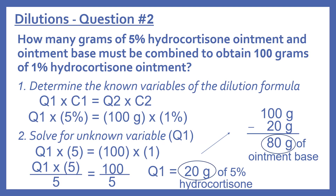Question number two: How many grams of 5% hydrocortisone ointment and ointment base must be combined to obtain 100 grams of 1% hydrocortisone ointment? We determine the known variables: Q1 times 5% equals 100 grams times 1%. Solving for Q1: Q1 times 5 equals 100 times 1, which is 100. Dividing both sides by 5 gives 100 divided by 5 equals 20. So Q1 equals 20 grams of 5% hydrocortisone ointment.